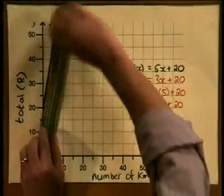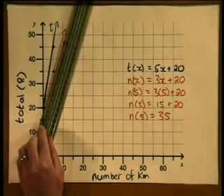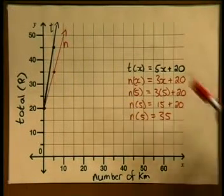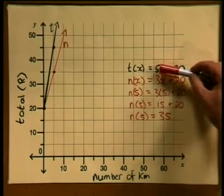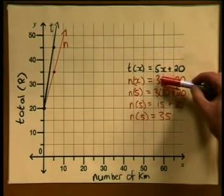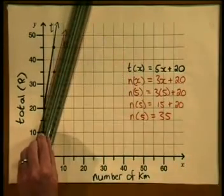So there we have the graph of the function n. Did you notice what is different between the graphs? The graph of t has been turned to become the graph of n. We call this a rotation. The graph of t has rotated or turned about the point y equal to 20 to become the graph of n. Have a look at the graphs again. Here the rate of change has changed. In t the rate of change was 5. It's now changed to 3. And as such the graph of t has turned to become the graph of n.